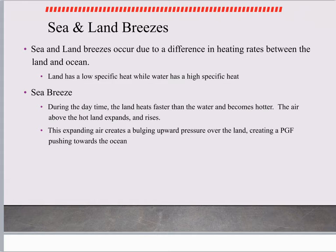These local breezes occur because there's a difference in heating rates between two locations. For land and sea breeze, we're going to talk about the heating rates between land and water. Land has a low specific heat, where water has a high specific heat. Specific heat is the amount of energy needed to change the temperature of a substance. So land has low specific heat, which means it does not take a lot of energy to change, where water has a high specific heat — therefore it takes a lot of energy to heat up, but also cool down.